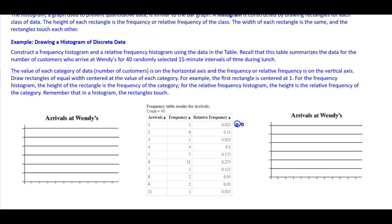The rounded relative frequencies are: 0.03, 0.15, 0.03, 0.10, 0.18, 0.28, 0.13, 0.05, 0.05, and 0.15. Now over to the left, we're going to create our frequency histogram using the frequency.